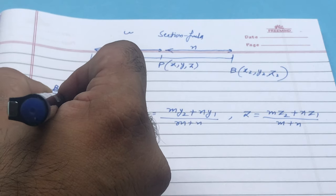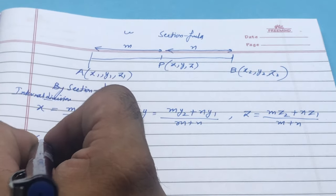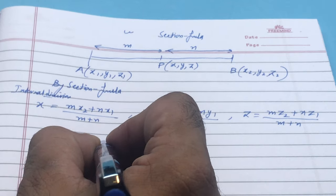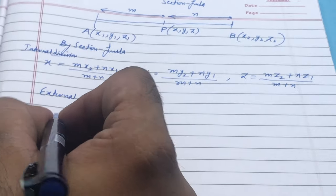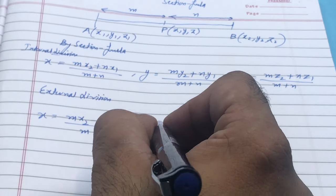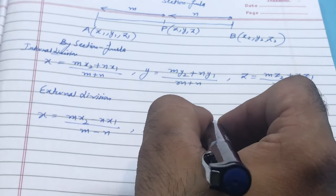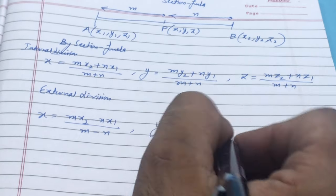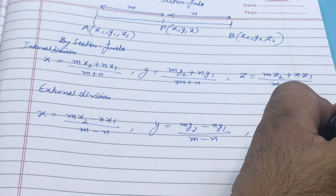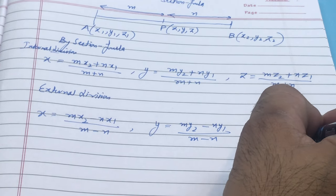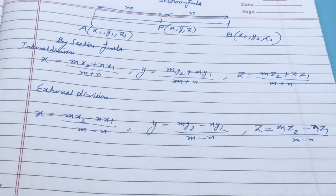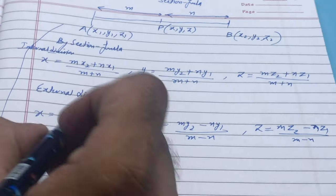Now let me tell you about external division — a new formula related to what you studied in Class 10 coordinates. When point P externally divides AB, the formulas become: x = (mx2 - nx1)/(m - n), y = (my2 - ny1)/(m - n), and z = (mz2 - nz1)/(m - n). Keep these two formulas in mind.